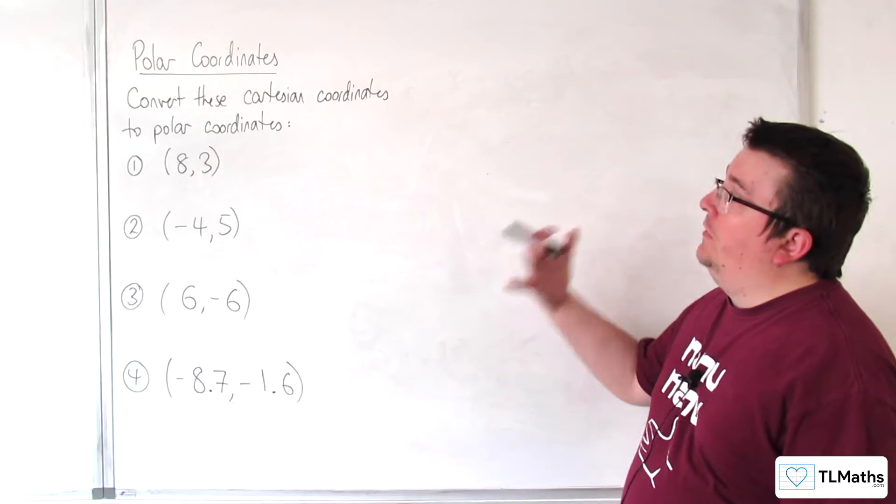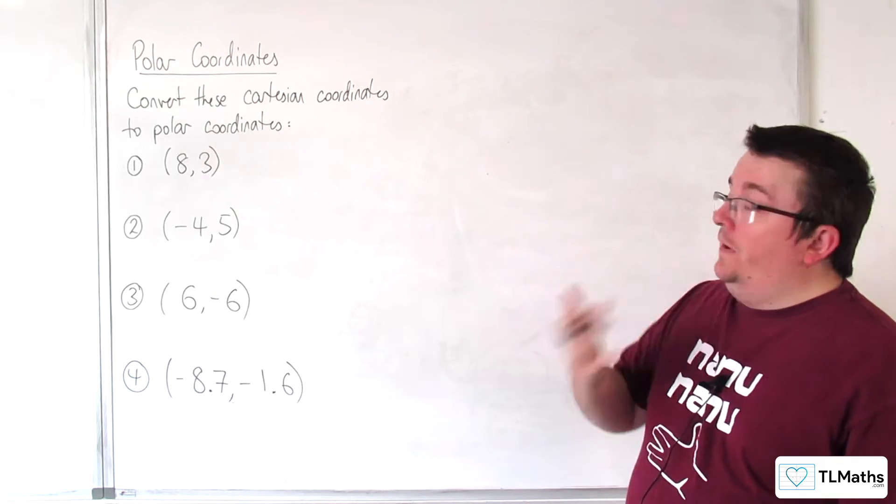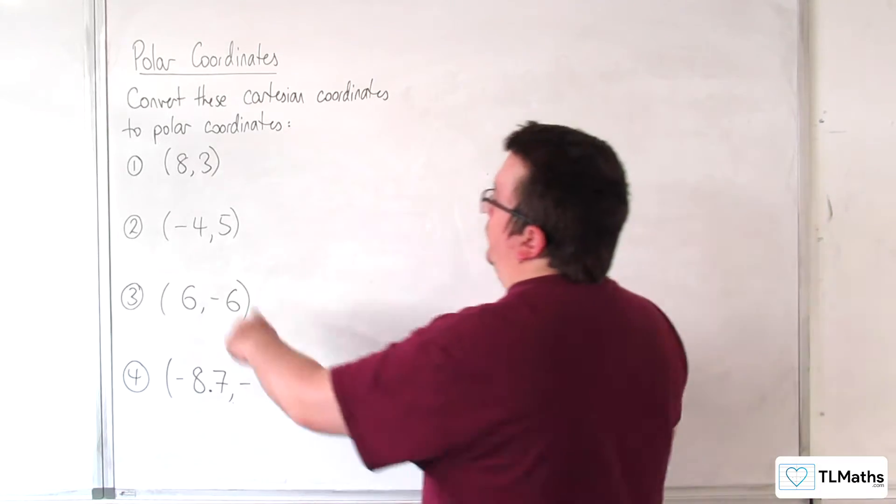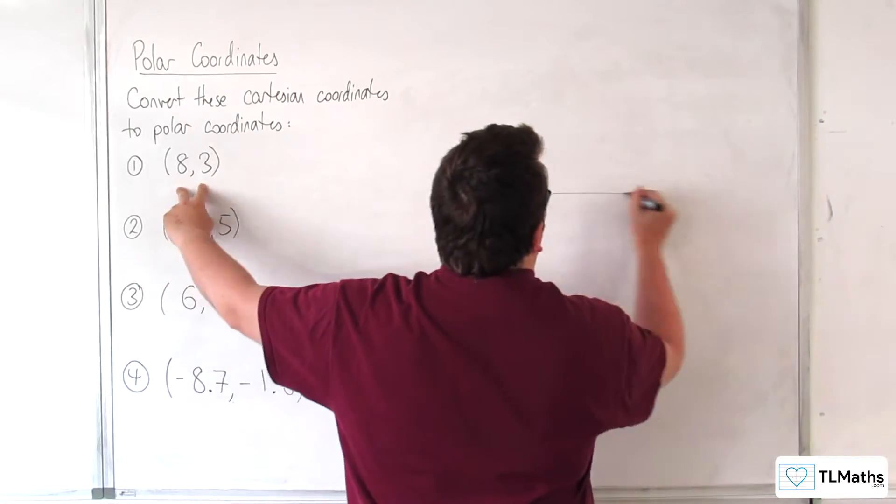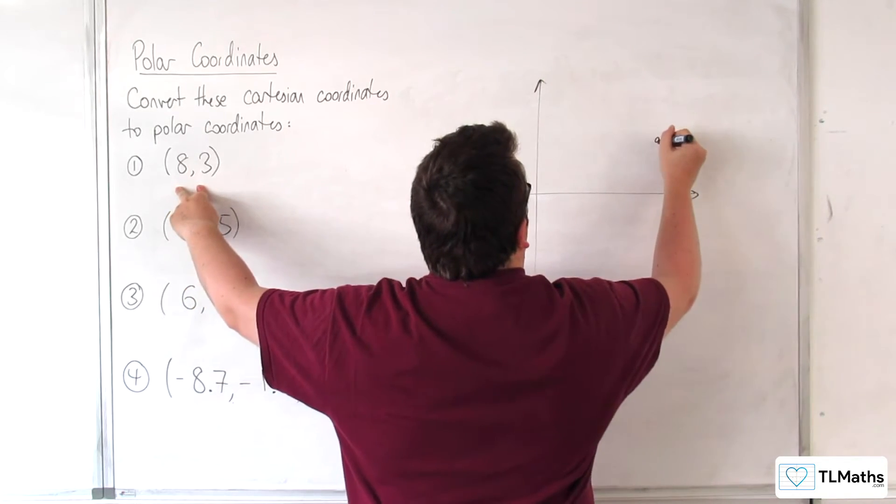Now we're going to convert from Cartesian coordinates to polar coordinates. First thing to do is to draw a little diagram so you can visualize what's going on. So let's look at (8, 3), somewhere here.